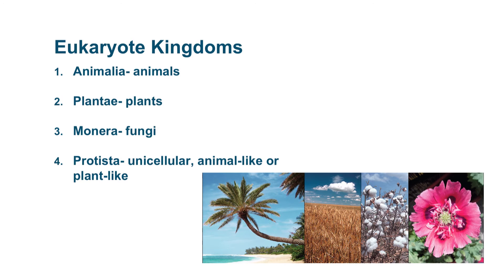The eukaryote kingdoms include Animalia, which are the animals; Plantae, which are the plants; Monera, which are the fungi; and Protista, which are all unicellular, but some are like animals and some are like plants.